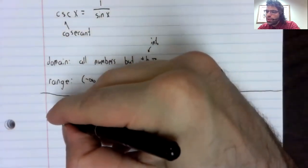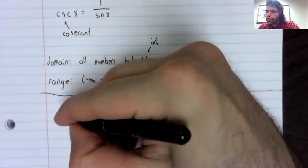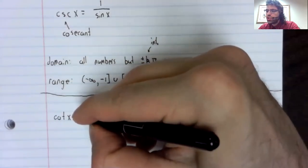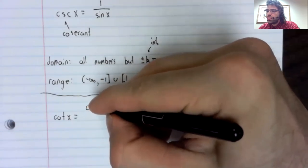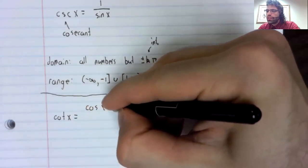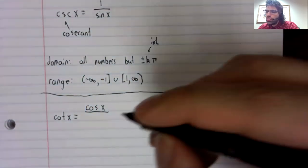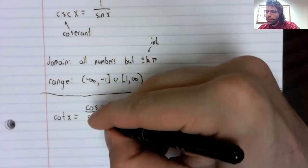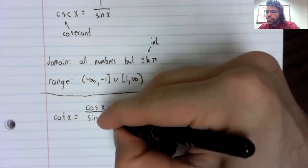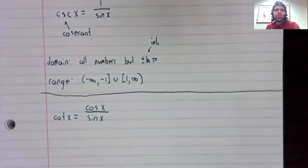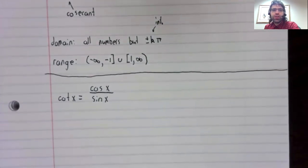Finally, we'll introduce the cotangent. Whereas the tangent is the sine over the cosine, the cotangent is the reciprocal of that, the cosine over the sine.